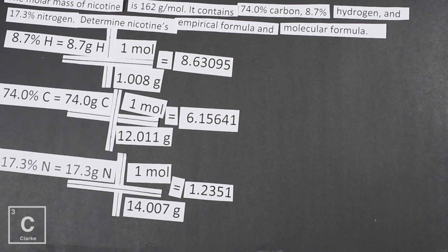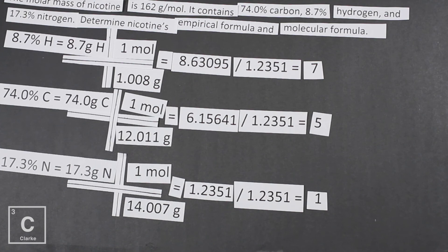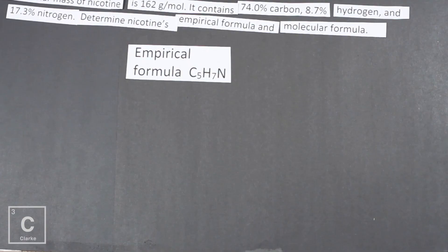We've gone percent to mass, mass to mole. Now we get to divide by small — this is the step people forget. A lot of times you start trying to multiply by whole and get stuck; that's because you forgot to divide by small. Don't forget it — it's super important. The smallest value here is nitrogen at 1.2351. We divide each by that, and look — they are already whole numbers, so we do not have to multiply by whole. Our empirical formula for nicotine is C5H7N.